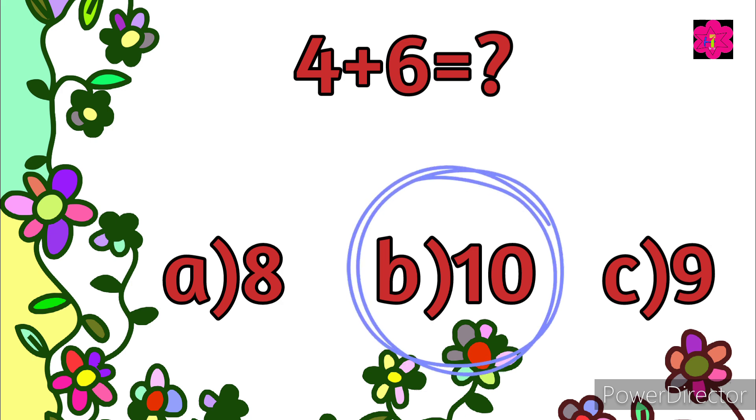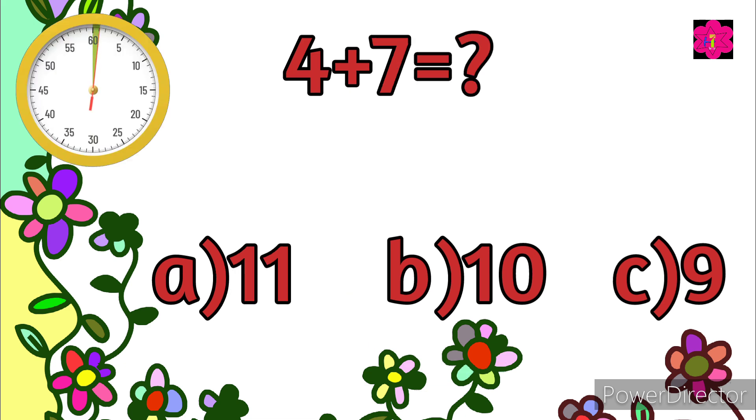Good job, correct answer is 10. 4 plus 6 is equal to 10. Next sum is 4 plus 7 is equal, and your time starts now.